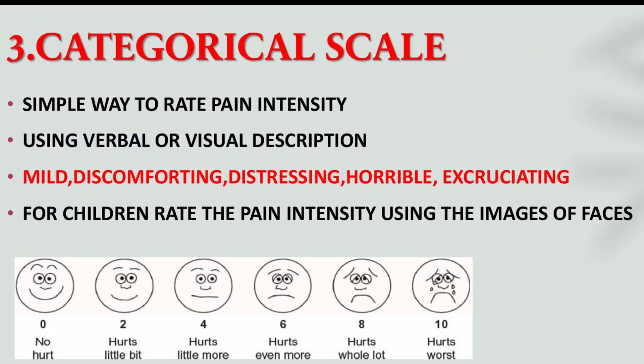The third one is the categorical scale. These pain scales give people a simple way to rate their pain intensity using verbal or visual descriptions. Examples include words like mild, discomforting, distressing, horrible, and excruciating. For children, we can assess pain using images of faces. There are 8 different faces with various expressions, and we choose the face most consistent with the child's current expression to get the pain intensity.